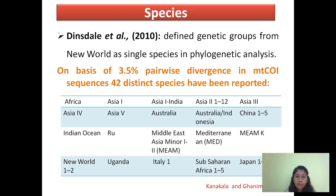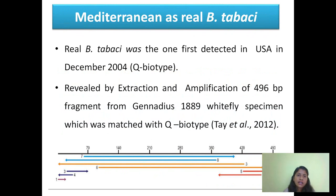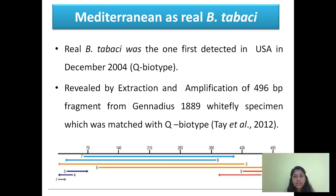Bemisia tabaci is totally composed of 42 distinct species, including Africa, Asia 4, Asia 1, India, and Australia among others. Finally, which is the real Bemisia tabaci? This was solved by extracting and amplifying a 496 base pair fragment from the January 1889 whitefly specimen that Gennadius described as Aleurodes tabaci. It was found to match with the Q biotype — that is, the Mediterranean. So the real Bemisia tabaci was the one first detected in the USA in December 2004.